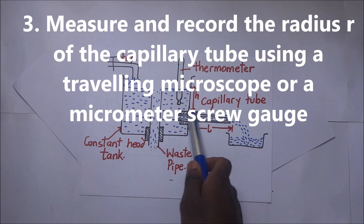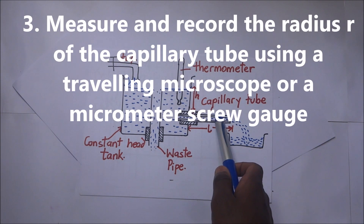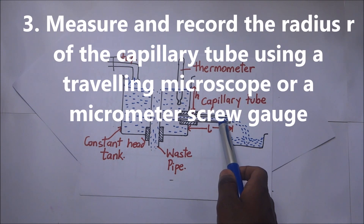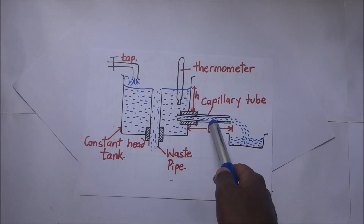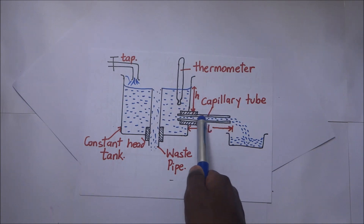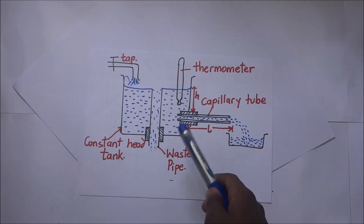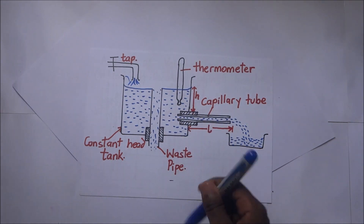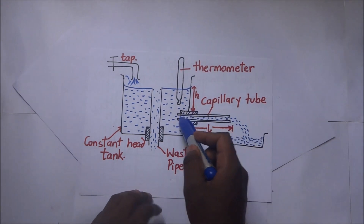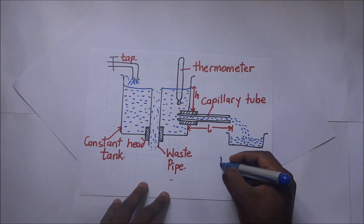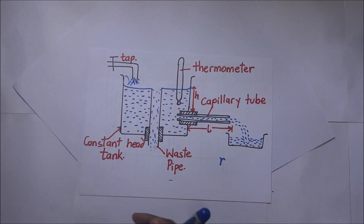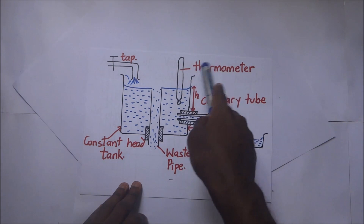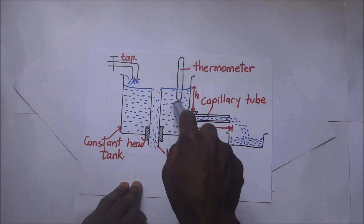We are also supposed to record the capillary tube's radius. We can use a traveling microscope or a micrometer screw gauge to do so. By measuring this, we are finding the value of r to use in our equation.